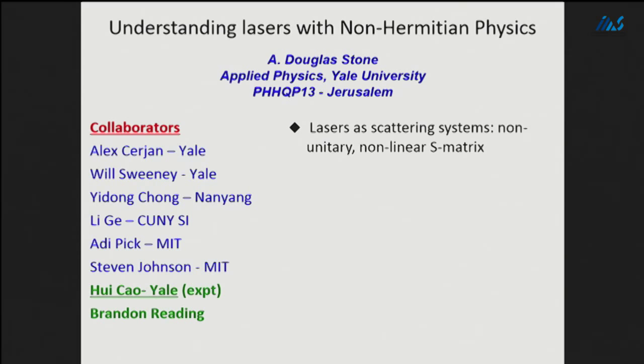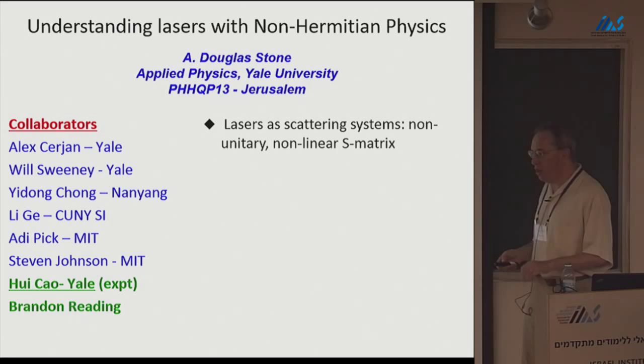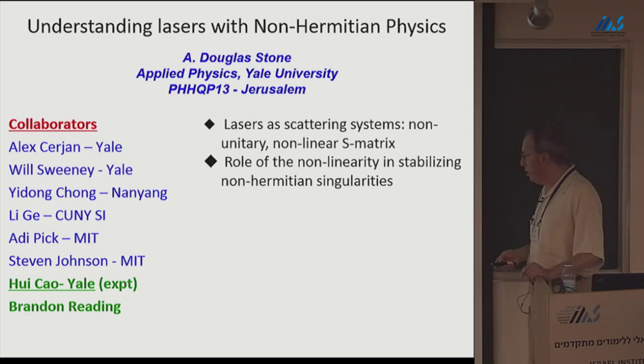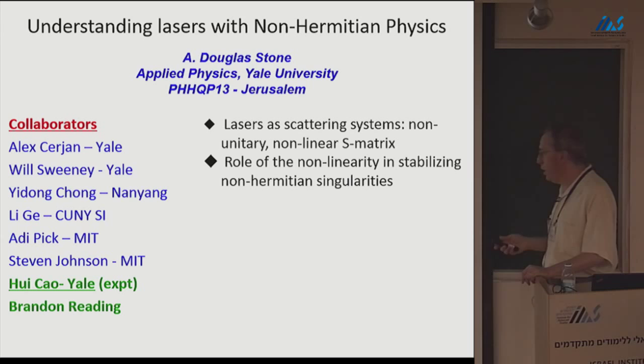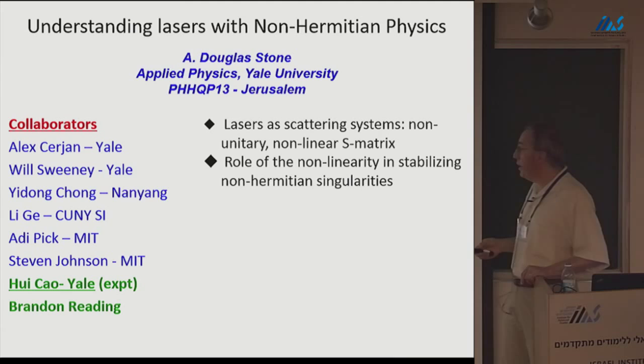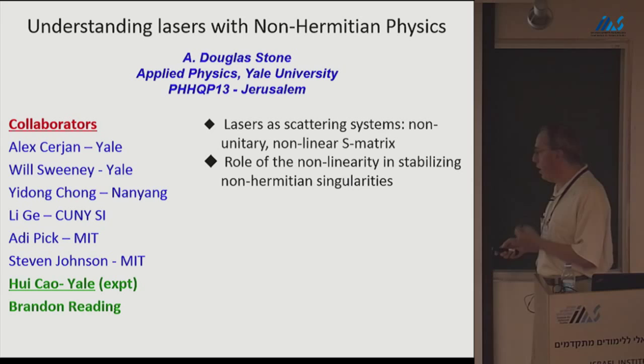The basic approach I've been developing is treating lasers as scattering systems, but with a non-unitary and non-linear S matrix. Many of you have heard an earlier version of this. I'll skip some of the pedagogical material, but ask if you're lost. This is a relatively new point of view in laser theory, and I want to emphasize the role of nonlinearity in stabilizing the non-Hermitian singularities that occur in the linear theory — which are what we call the lasing transition.